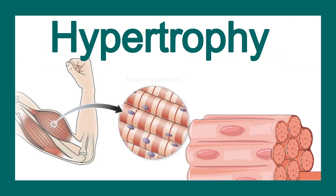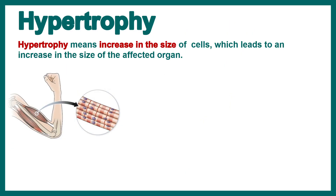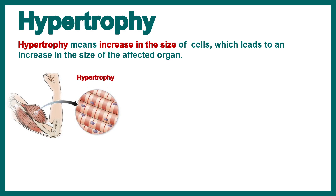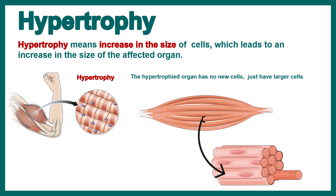Now let's talk about hypertrophy. When we think of hypertrophy, muscle hypertrophy comes to mind first. Just like hyperplasia, hypertrophy can also be pathologic or physiological. Hypertrophy means an increase in the size of cells but no new cells are added — simply put, there are bigger cells. The hypertrophied organ has no new cells; it just has bigger cells. This is the most important thing to understand.